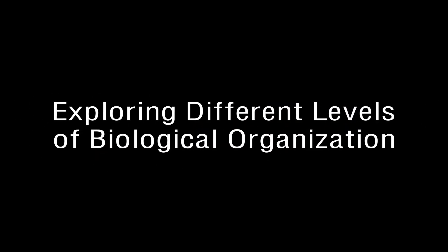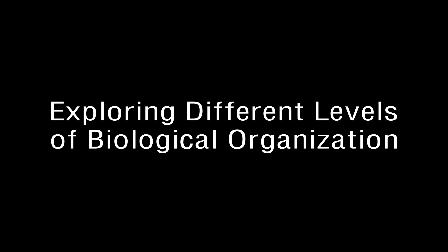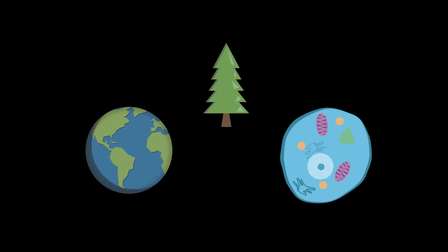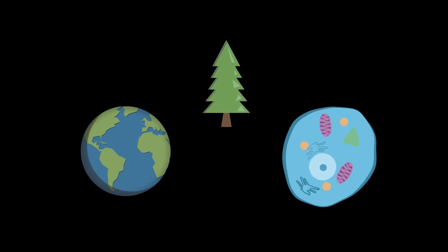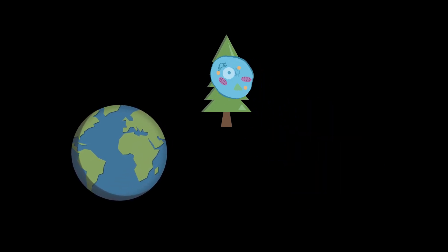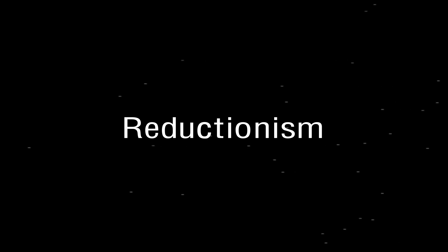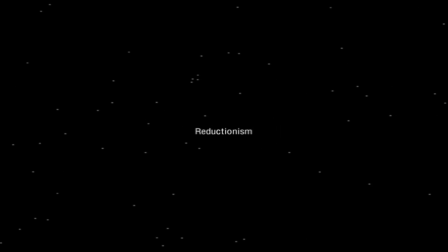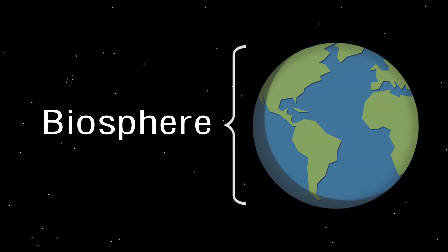In this opening episode, we are going to explore the different levels of biological organization. In order to study these different levels, we will use an approach termed reductionism — to reduce complex systems to simpler components that are more manageable to study. This journey begins in outer space.